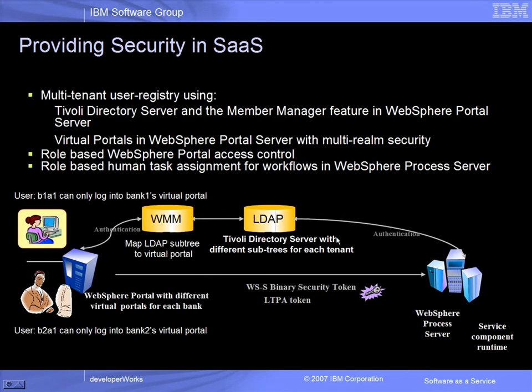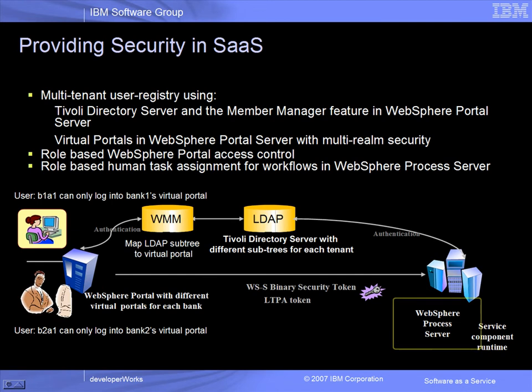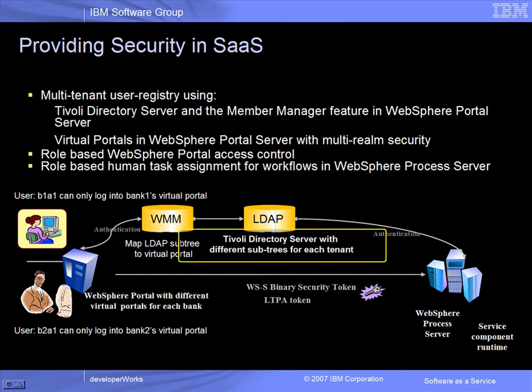In order to address these security challenges for multi-tenancy, the following product features were exploited. WebSphere Portal Multi-Realm Security was used to isolate the user populations for each tenant bank so that a user for one bank can only authenticate to the virtual portal for that bank. WebSphere Portal Access Control was used to restrict access to portal pages and portlets by role. WebSphere Process Server was used to assign human tasks in BPEL processes to specific bank roles. A Tivoli Directory Server User Registry was used to assign each tenant's user population to different LDAP subtrees.